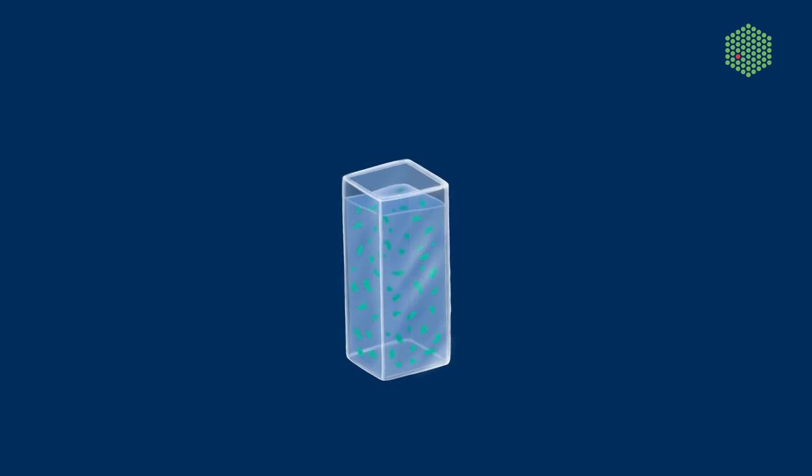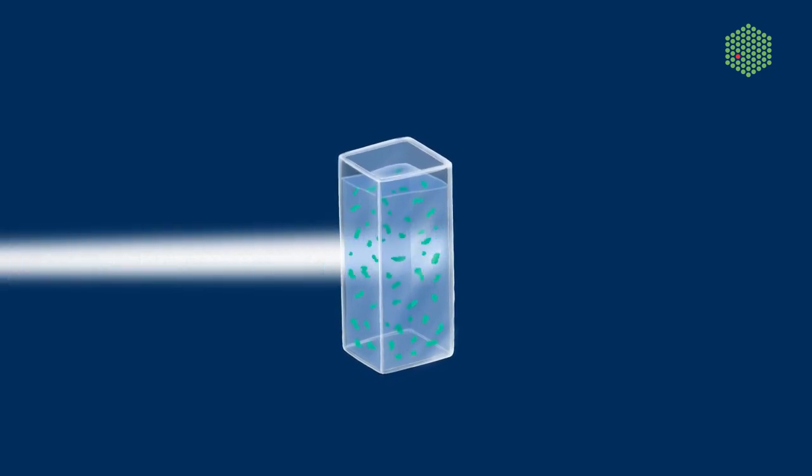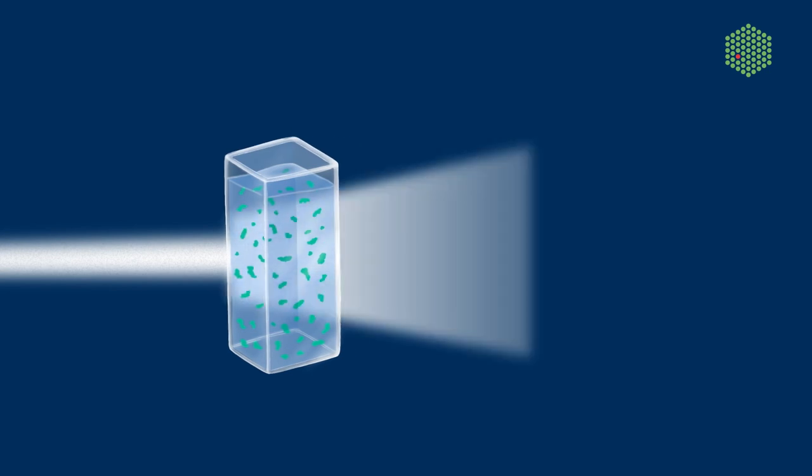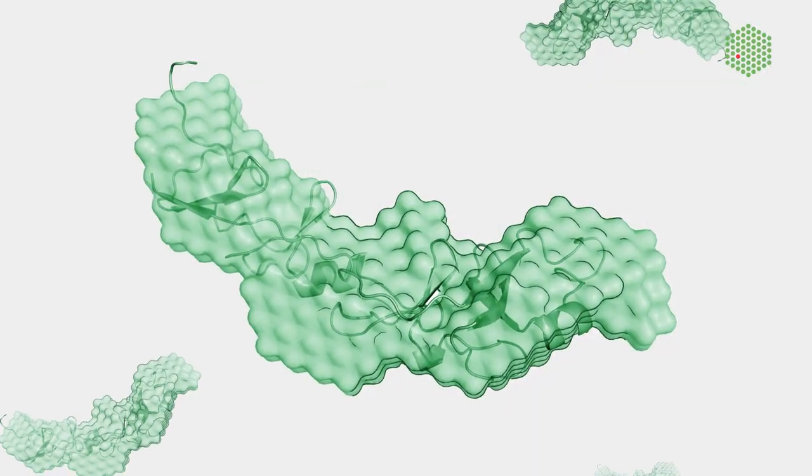BioSAXS lets scientists determine the shape and dynamics of biomolecules by shooting X-rays at them. As the X-rays pass through the sample, they get scattered in a unique pattern. Scientists then analyze the pattern using computational methods to work out the 3D structure of the molecule.